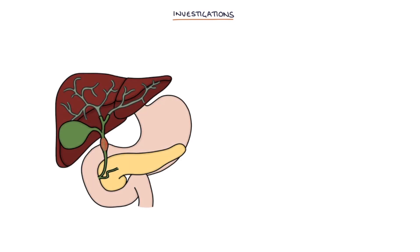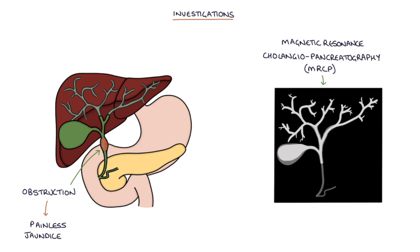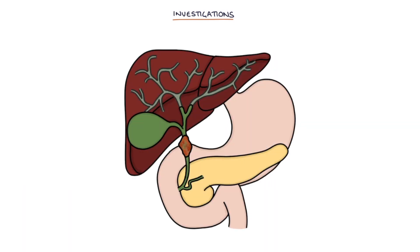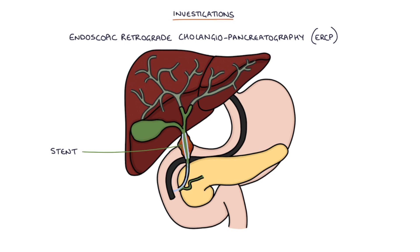If the patient has evidence of obstruction, for example painless jaundice, a magnetic resonance cholangiopancreatography — or MRCP — imaging may be used to visualise the biliary system in detail and assess any obstruction. If there is obstruction in place, an endoscopic retrograde cholangiopancreatography — or ERCP — can be used to put a stent in to relieve the obstruction, and it can also be used to obtain a biopsy from the tumour.